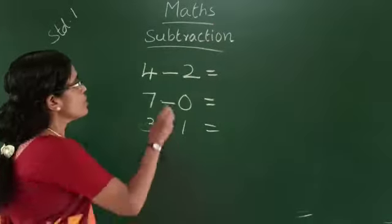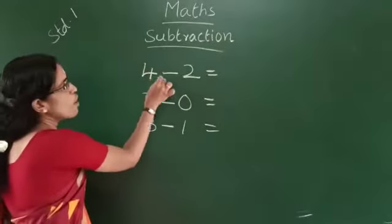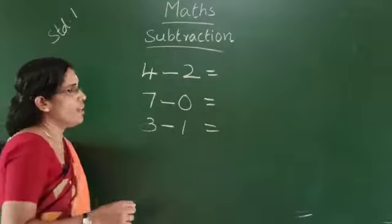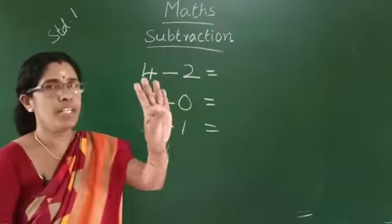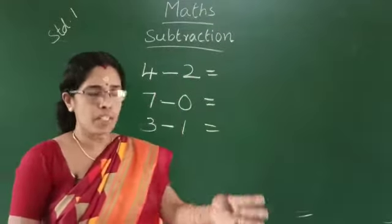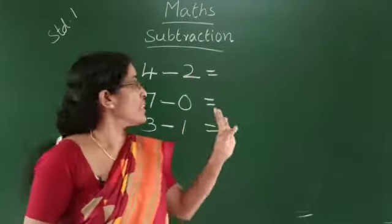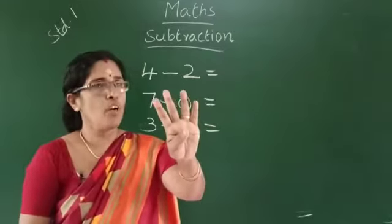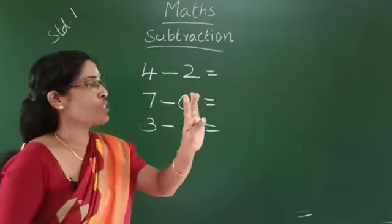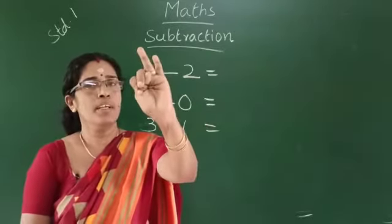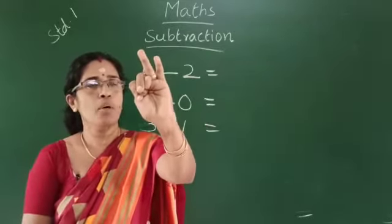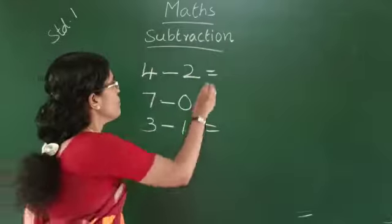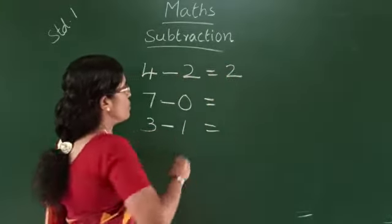Next, 4 minus 2. How do you get it? 4 minus 2. We fold 2 fingers. How many fingers remaining? 2. 4 minus 2 equals 2.